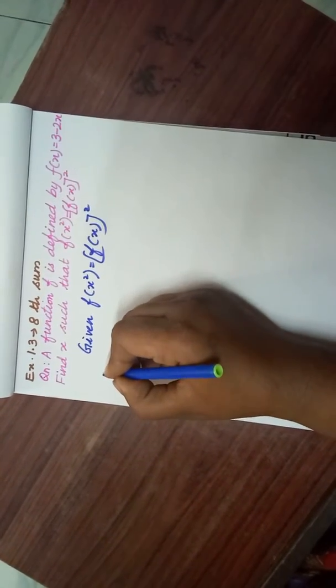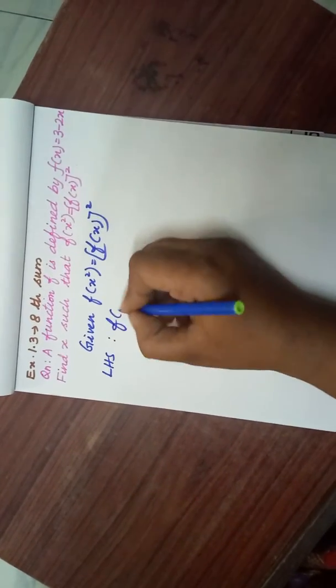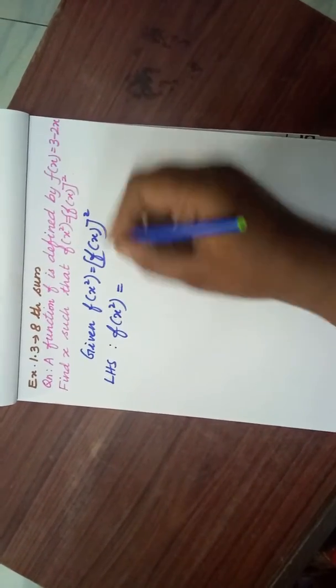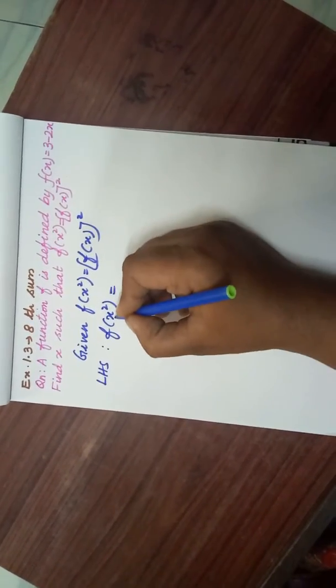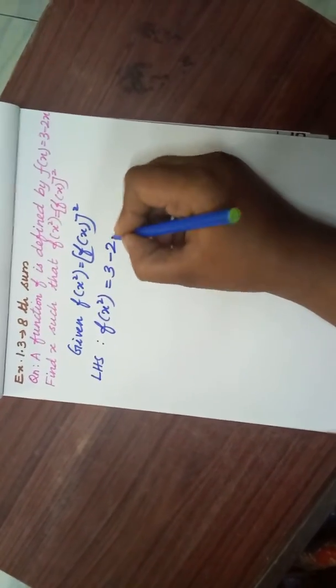First let us take LHS. f(x²) equals - in the function f(x), put x² in the place of x. So 3 - 2x².